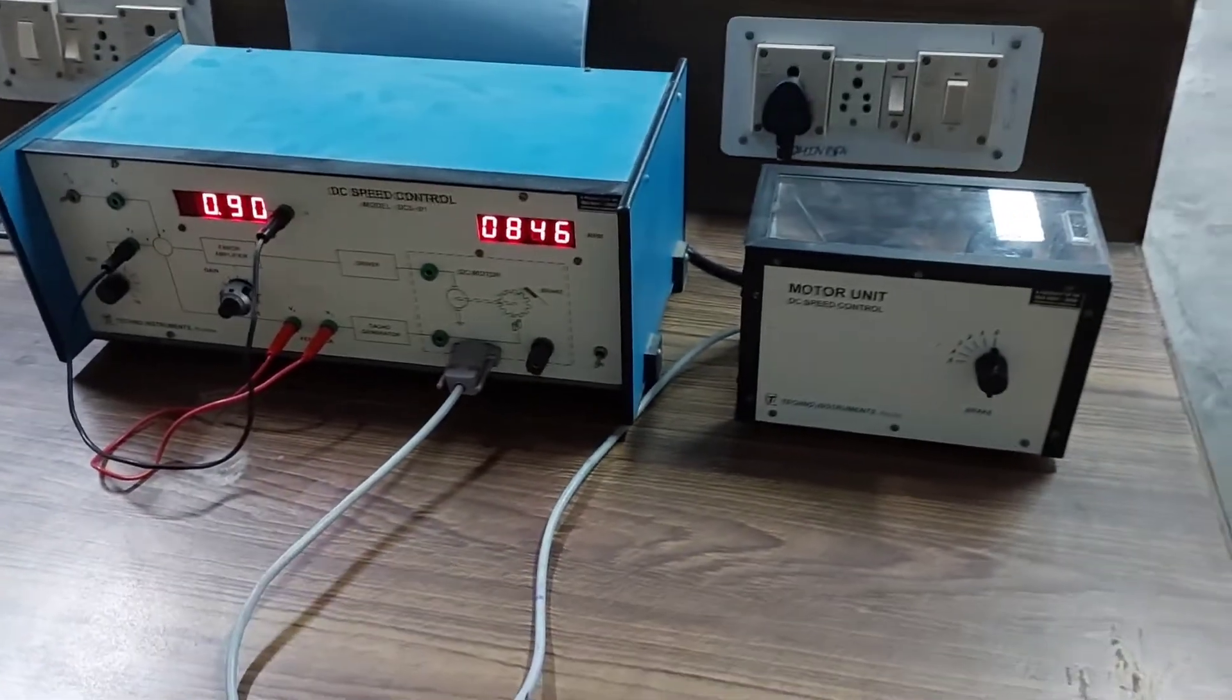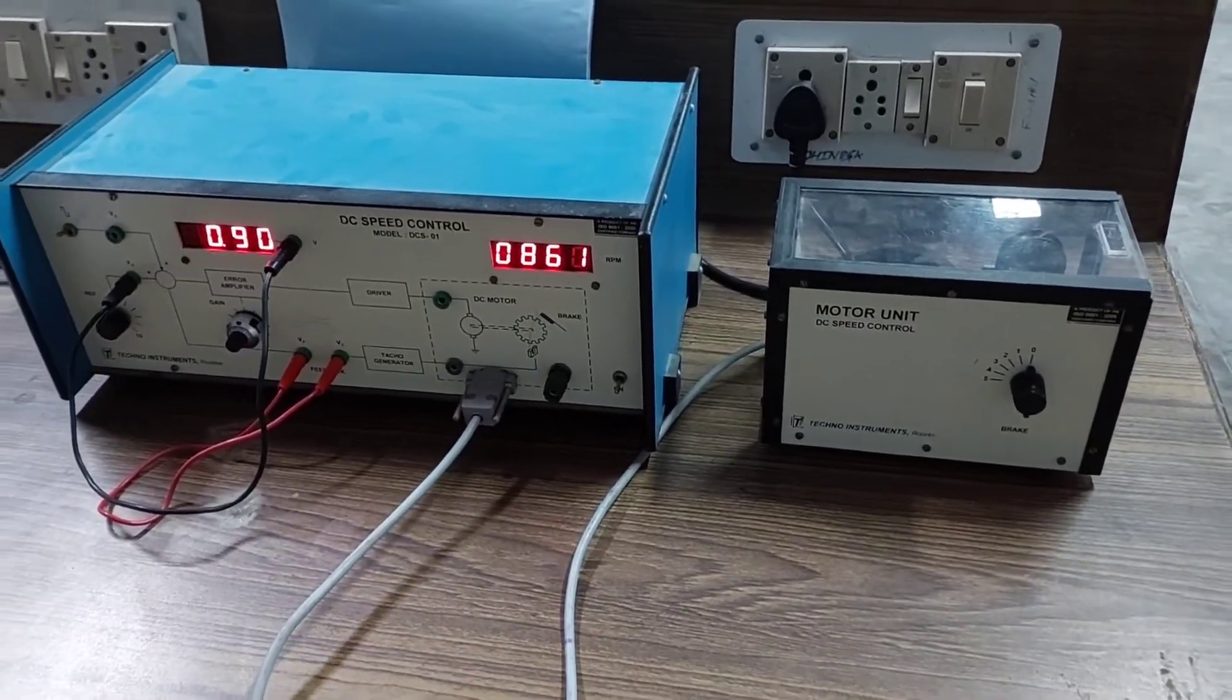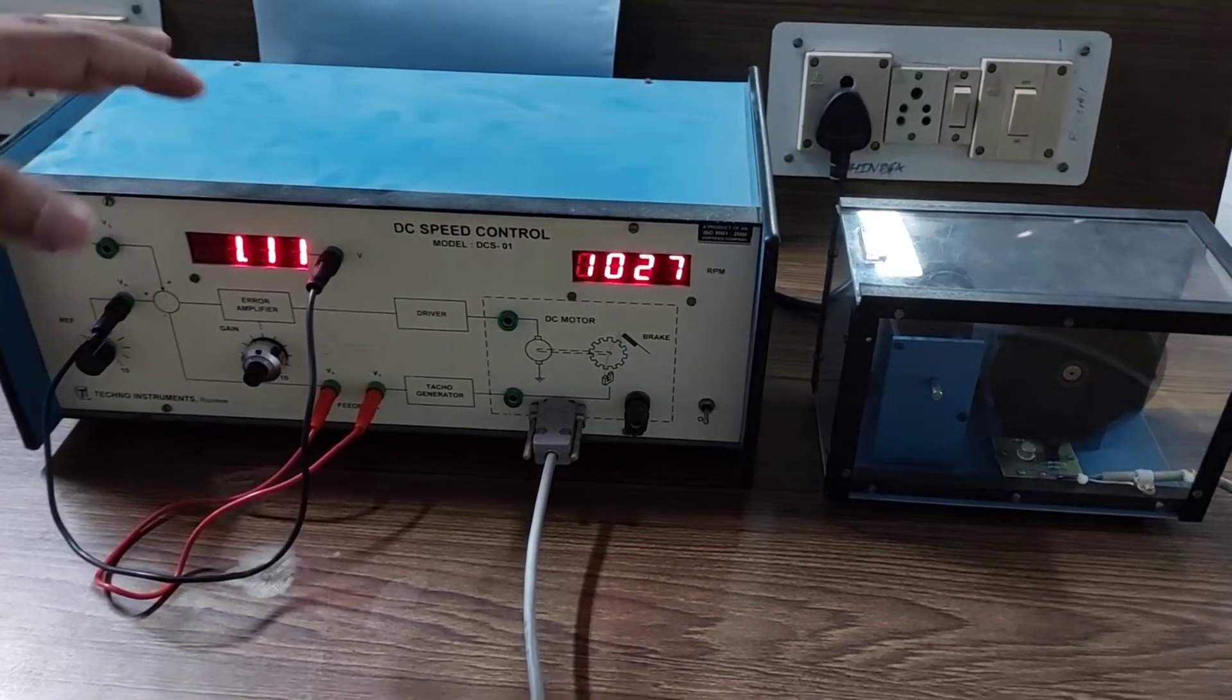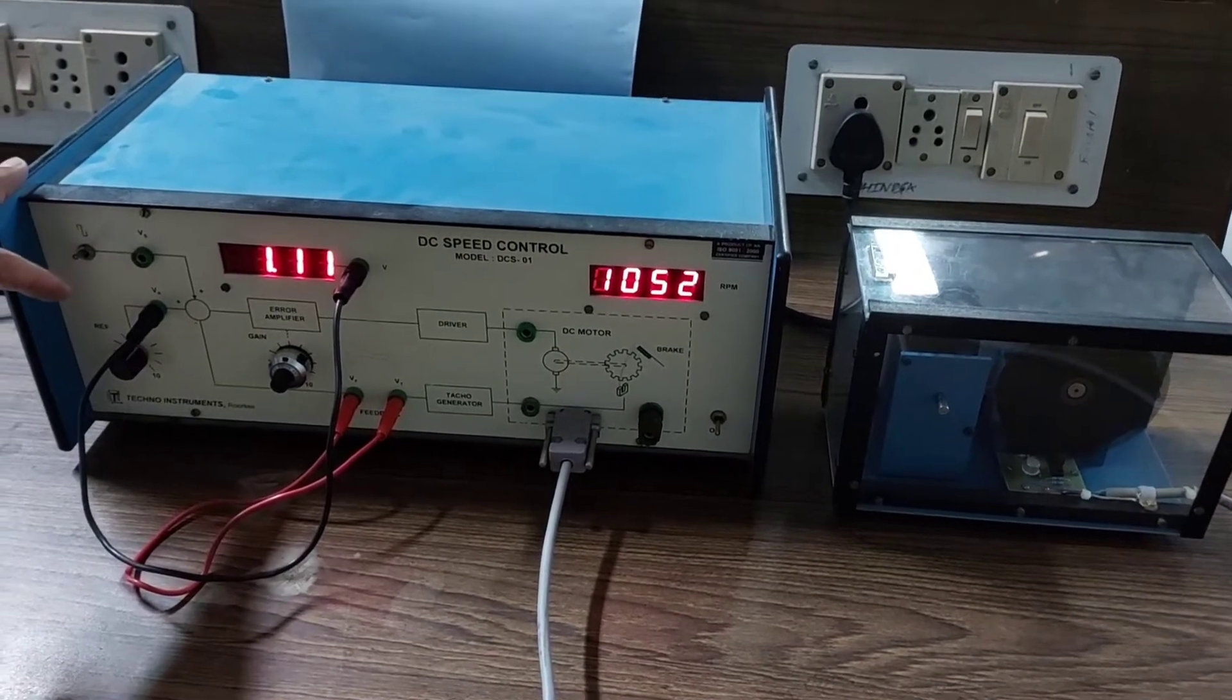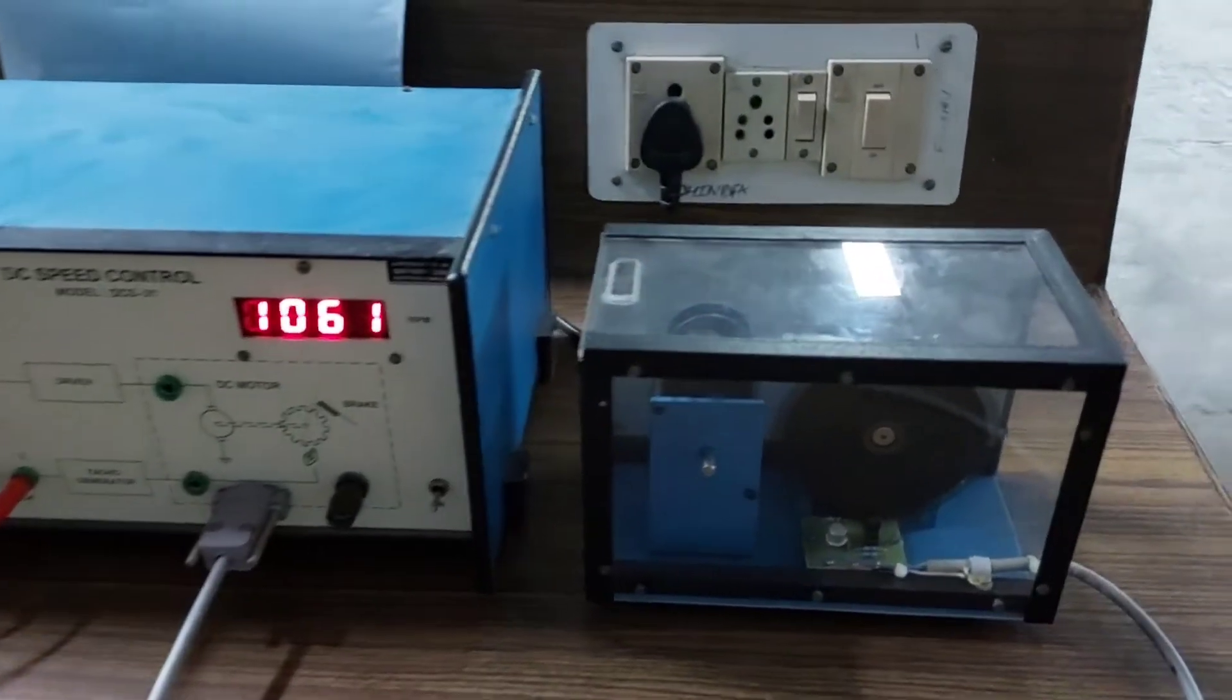We are going to discuss the control of speed of DC motor which has two assemblies. One of them is the motor unit and another one is the control unit.